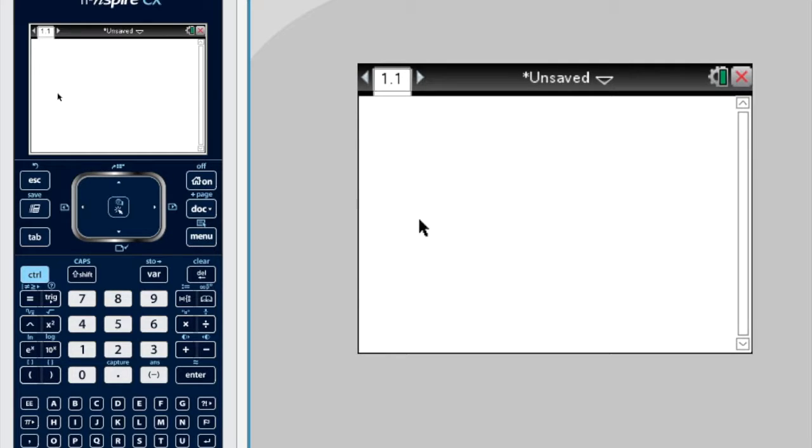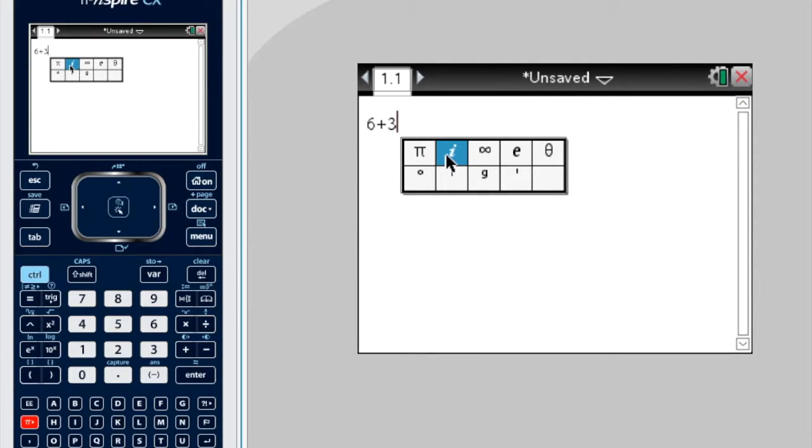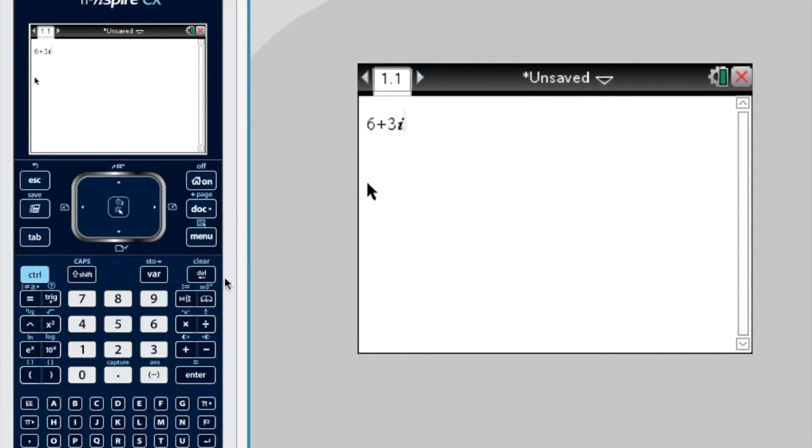Now to enter 6 plus 3i, we can put 6 plus 3. We don't actually press i—that will just be a letter like a variable. We press the pi button and choose i. Then that's 6 plus 3i. If we press enter, it'll understand it.